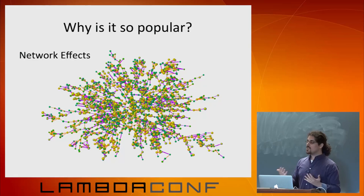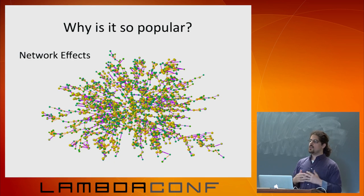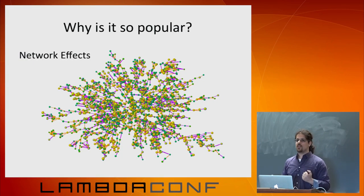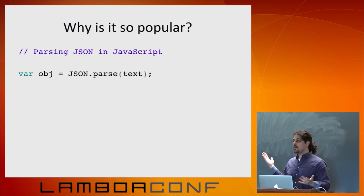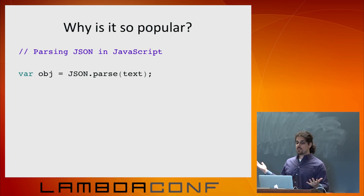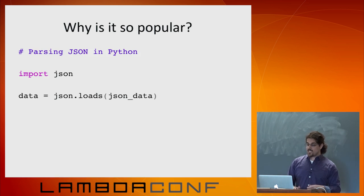This is really important. The best solution doesn't always win — there are other social effects at play. Why is JSON so popular? We'd hope that JSON, being the JavaScript Object Notation, is easy to use in JavaScript. Lo and behold, it is. It's also easy to use in Python — you just import JSON and say json.loads.